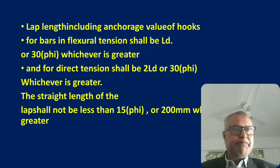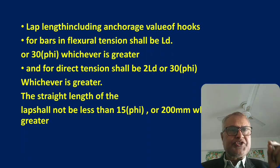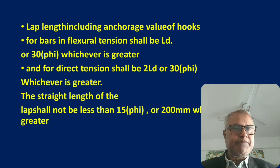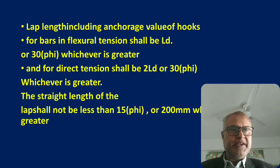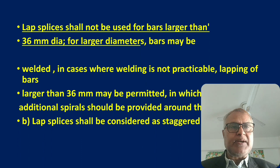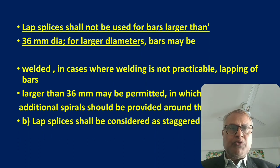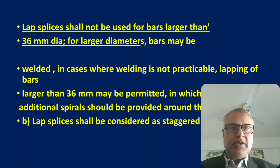The straight length of the lap shall not be less than 15φ or 200 mm, whichever is greater. This is taken into account when cutting the steel to size, since laps are needed because slab dimensions vary.